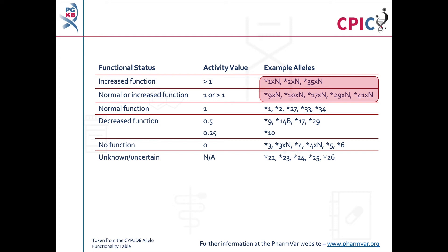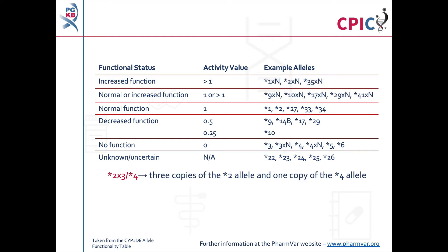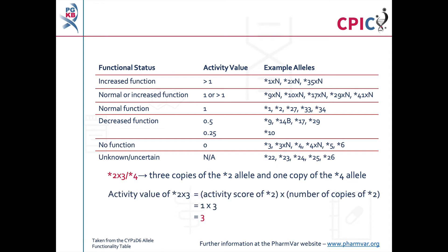It is important to note that patients can carry multiple copies of CYP2D6. Reports in the scientific literature have described cases where up to 13 copies of CYP2D6 were present in a patient's genome. Alleles present in multiple copies are given the suffix XN, where N is the number of copies present in a genome. For example, a patient with the genotype star 2X3 star 4 has 3 copies of the star 2 allele and 1 copy of the star 4 allele. The activity score of alleles present in multiple copies is calculated by multiplying the activity score for the allele by the number of copies present. In this case, the activity score of star 2X3 is 1 multiplied by 3, which equals 3. Further information about CYP2D6 alleles can be found at the PharmVar website at www.pharmvar.org.